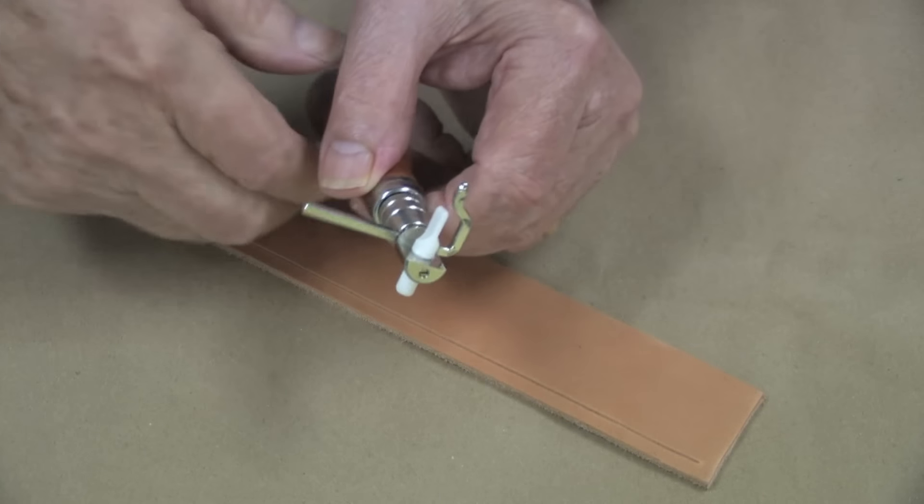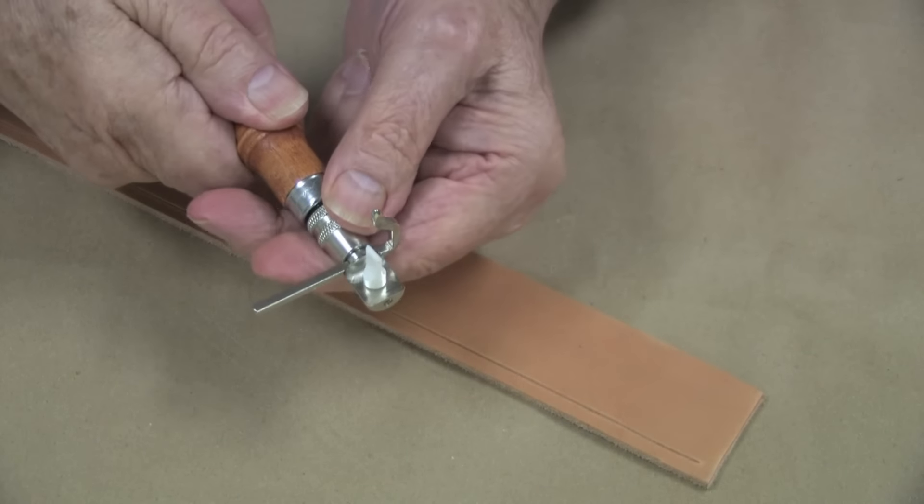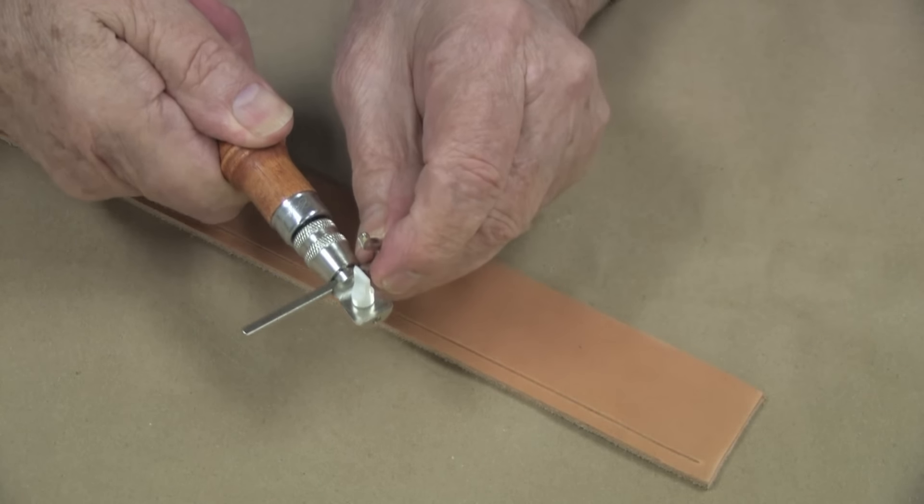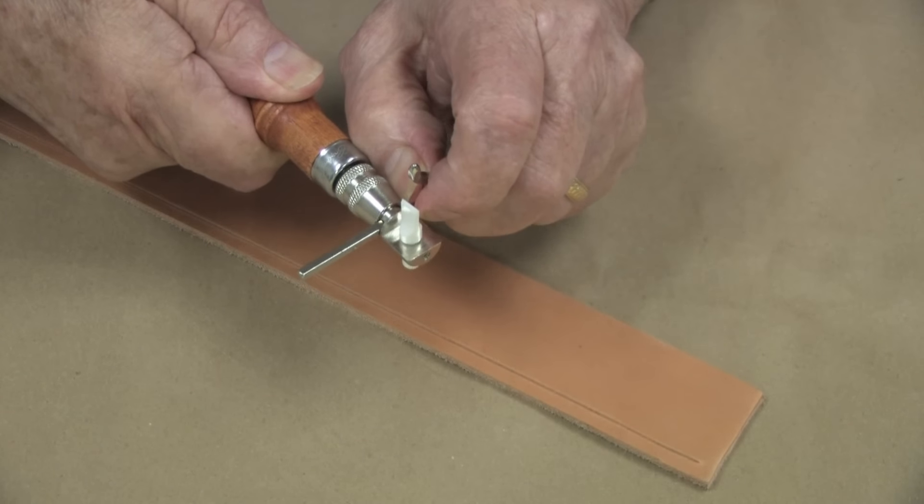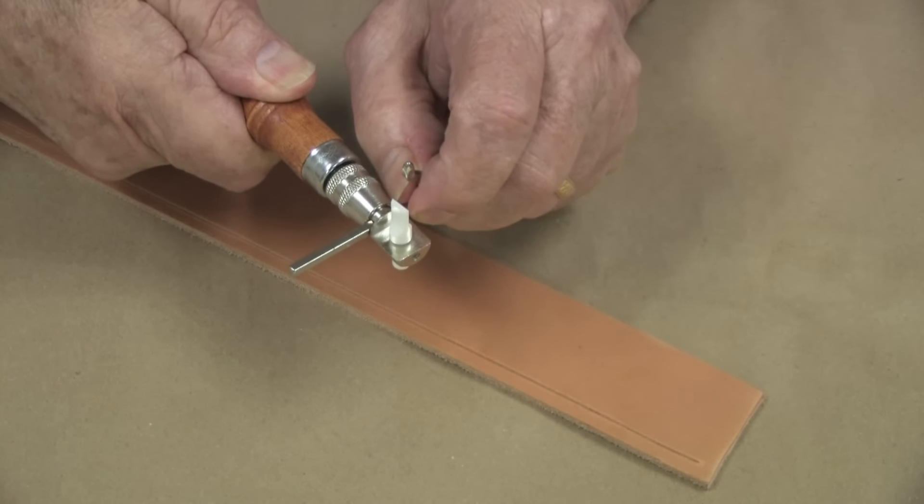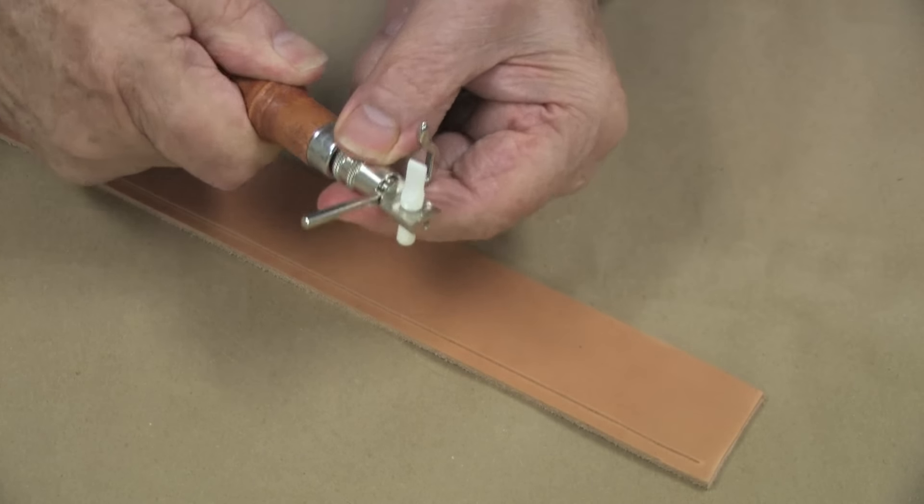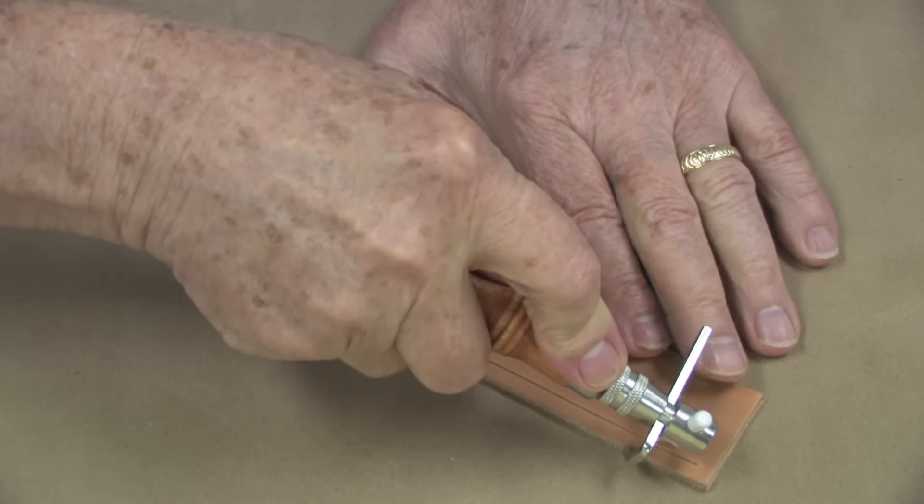If you would like to make a double border, simply reset your guide as you see me doing here. Tighten it down, check it on the scrap and cut the second line onto your project.